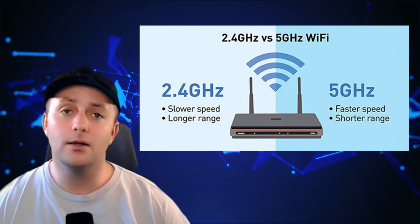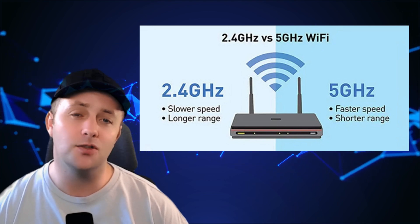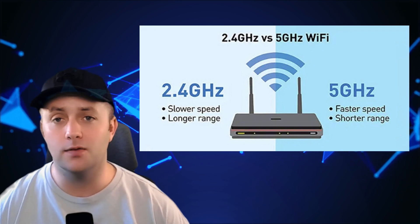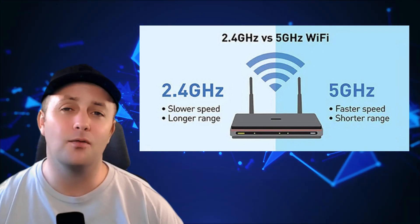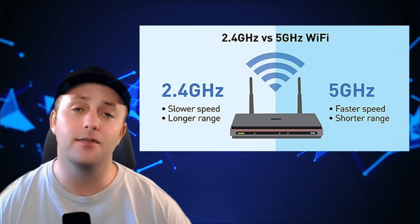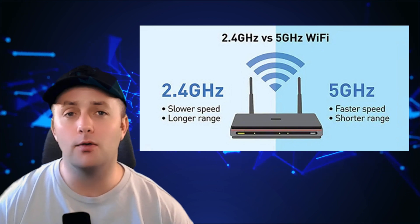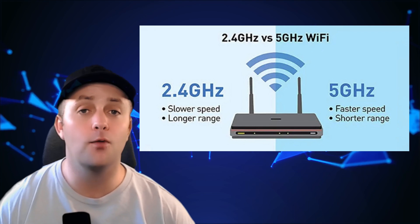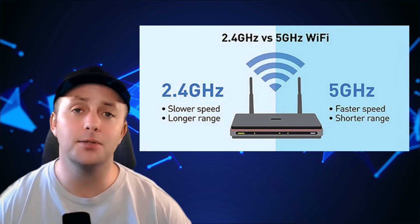Let's talk about the two main frequency bands used by Wi-Fi: 2.4 GHz and 5 GHz. The 2.4 GHz band has a larger range and can pass through walls more easily, but it's also more susceptible to interference from other devices like microwaves and cordless phones, which use that same frequency. This band is typically more crowded, especially in areas with a lot of Wi-Fi networks like apartment buildings. On the other hand, the 5 GHz band offers faster speeds and less interference, but it has a shorter range and struggles to pass through walls. Many modern routers support dual-band, which means they can use both 2.4 GHz and 5 GHz simultaneously, allowing you to choose the best option for your environment.